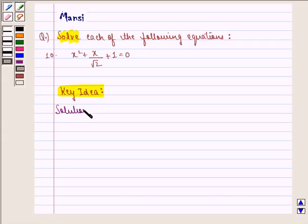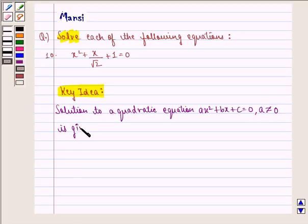Solution to a quadratic equation ax square plus bx plus c equal to 0 where a is not equal to 0 is given by x equal to minus b plus minus under the root b square minus 4ac, the whole divided by 2a.